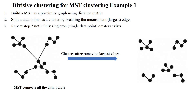Hi, welcome to divisive clustering for minimum spanning tree example. Here we have to build the minimum spanning tree from the graph by selecting the minimum weight edge cost, based upon the distance matrix.